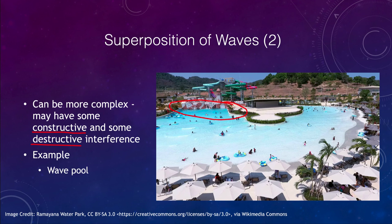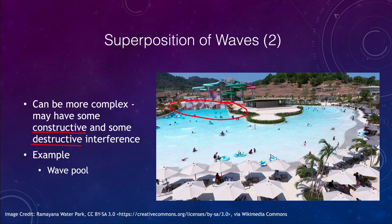Another example of destructive interference is noise-cancelling headphones. They detect incoming noise, invert it — positive values become negative and negative become positive — and combine that inverted signal with the original. When the two sounds are blasted into your ear, they cancel each other out. In practice it's not perfect, but the headphones significantly dull down the noise by introducing a negative value and causing destructive interference.